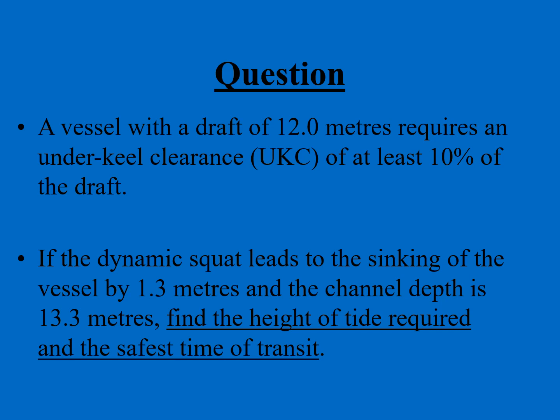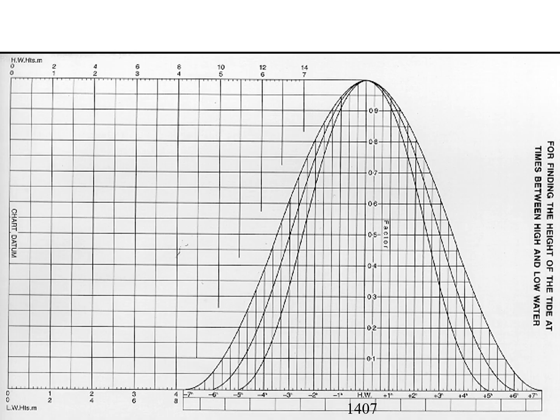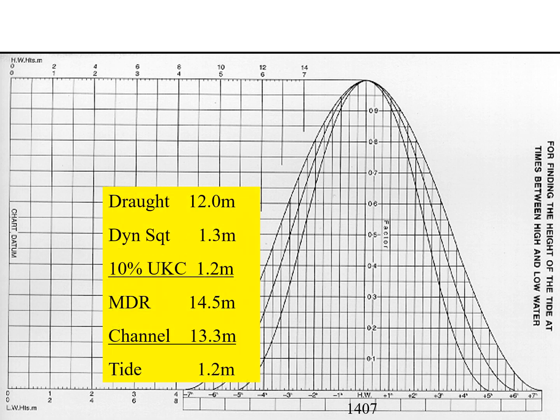To find the answer we use the well-known tidal graph for finding height of tide at times between high and low water. The information given: draft is 12 meters, dynamic squat adds 1.3 meters, and UKC required is 1.2 meters. So we need a total depth of 12 + 1.3 + 1.2 = 14.5 meters. Since channel depth is only 13.3 meters, the required height of tide is 14.5 − 13.3 = 1.2 meters.